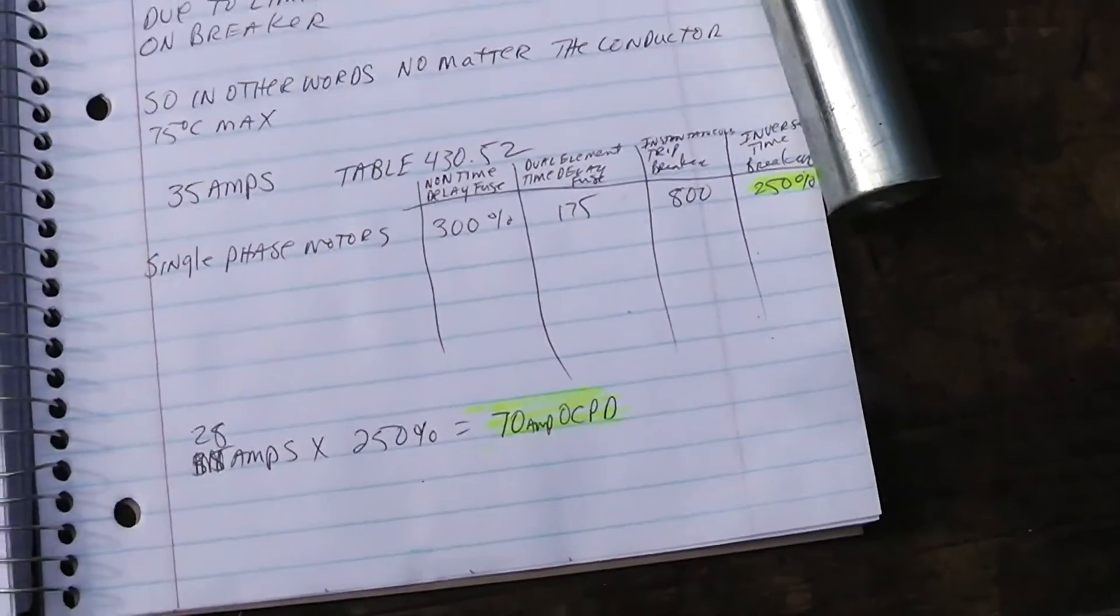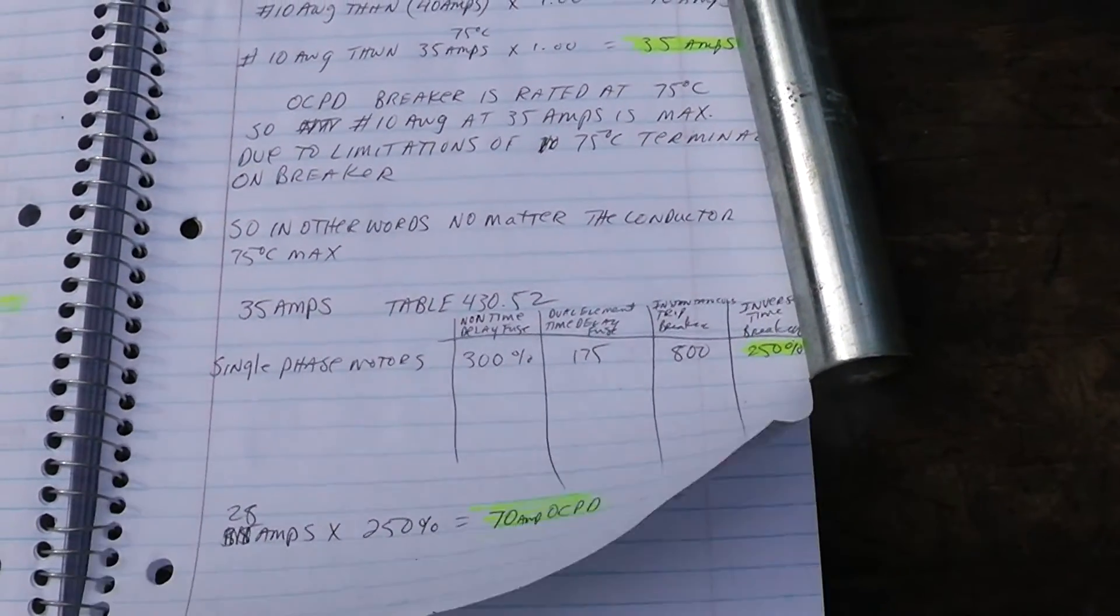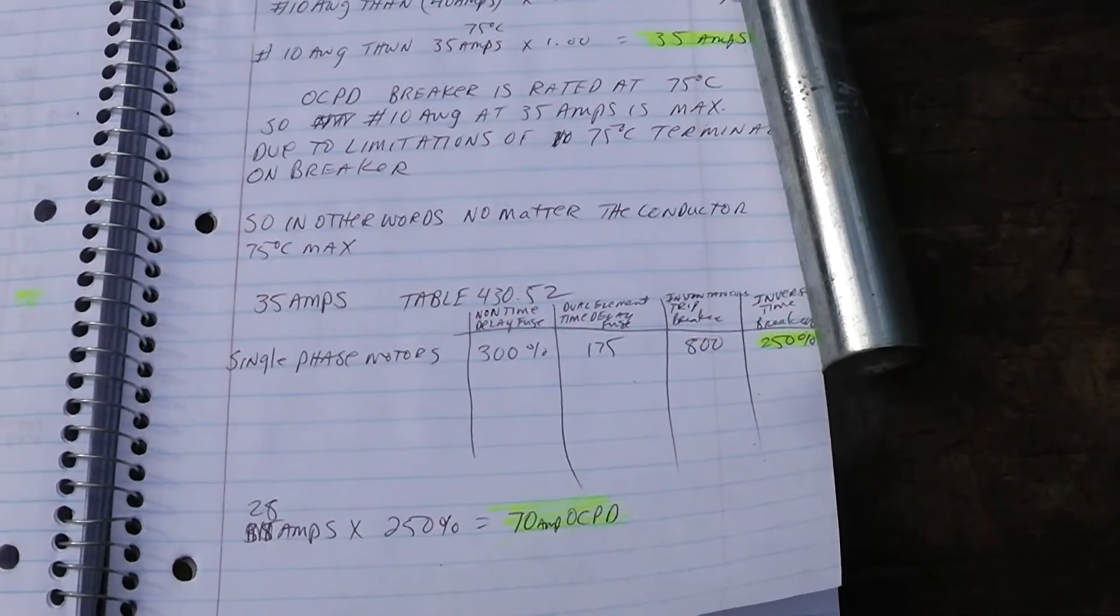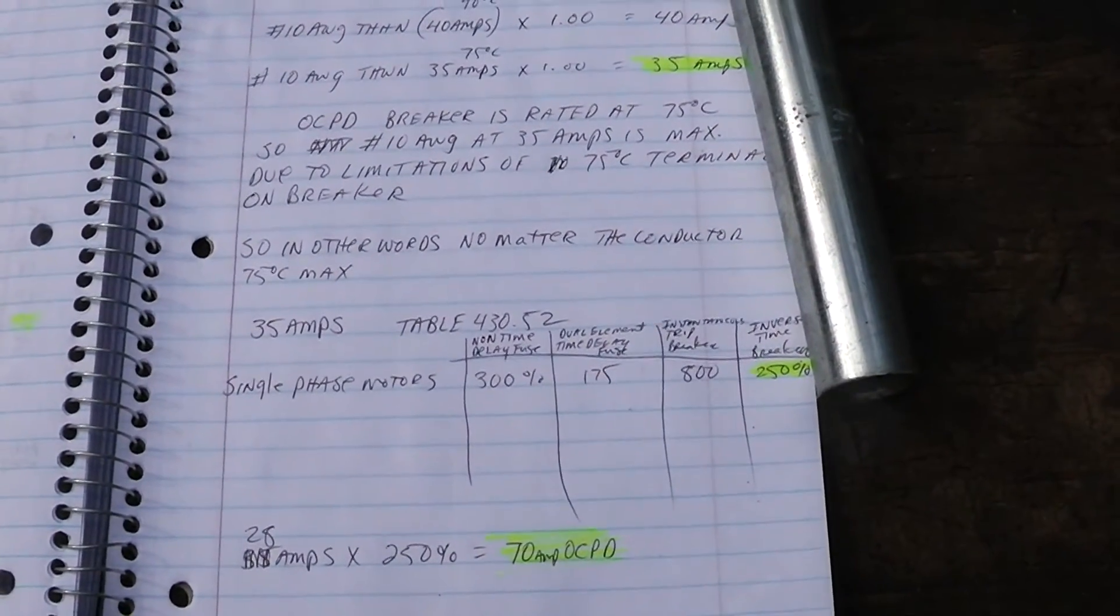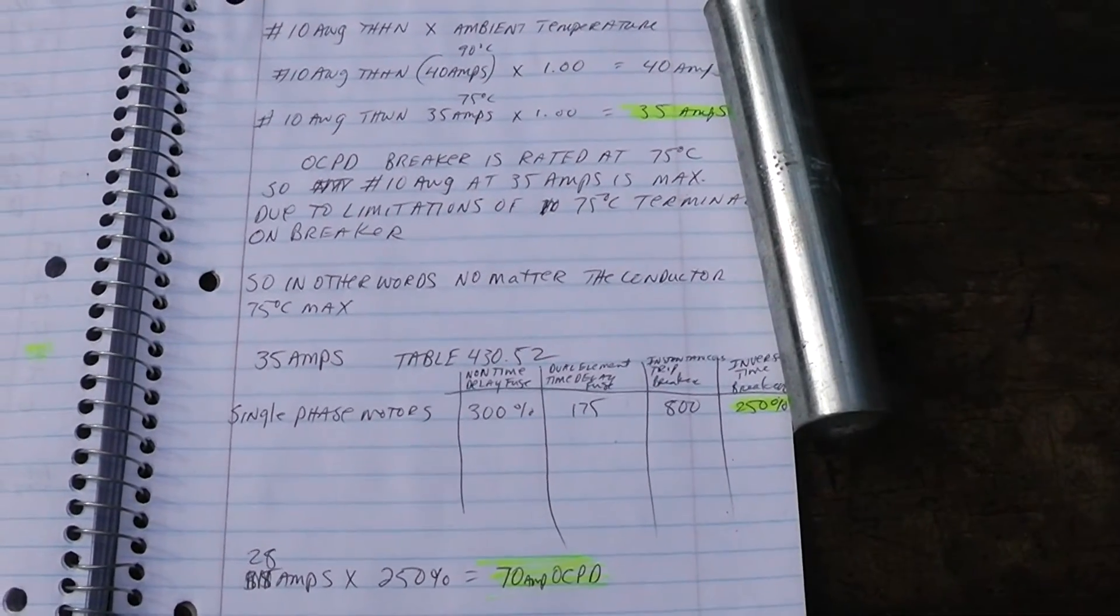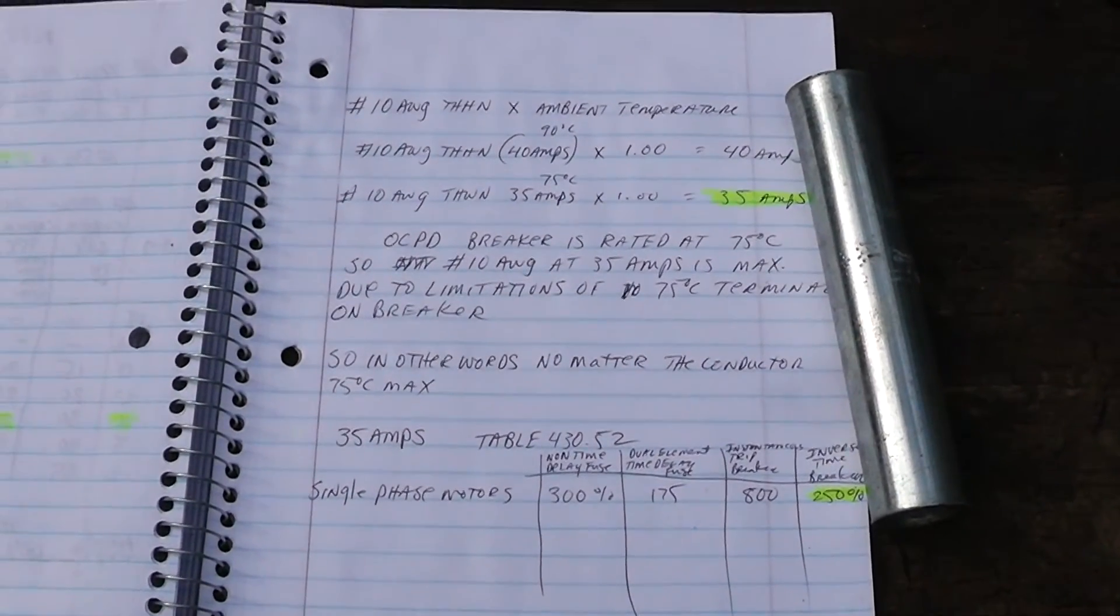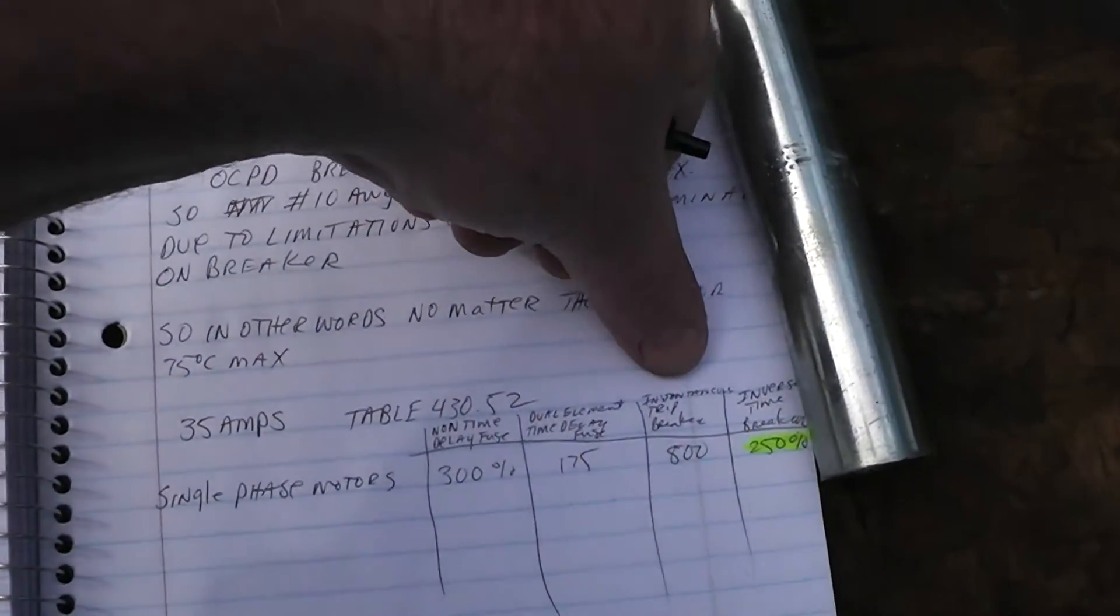I know a lot of people get a 5 horsepower compressor, they read the nameplate that says 23 amps, and they put a 30 amp breaker on it. It will work, but if you're going to have it inspected or if you want it to have a long service life, then you need to put that 70 amp breaker on there or use one of these fuses.